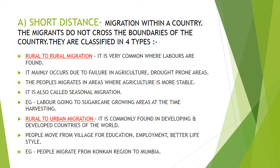Rural-to-urban migration is from village to city area. It is mainly found in developing and developed countries. People move from villages for education, employment, and a better lifestyle to urbanized areas. For example, people migrate from the Konkan region to Mumbai, as Konkan is less developed than Mumbai and has fewer facilities.